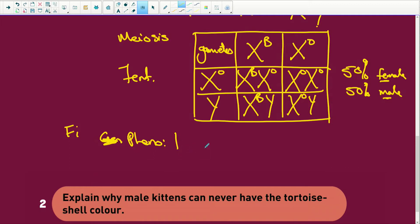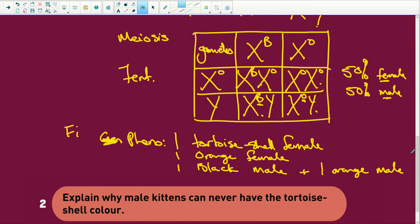What are we going to have? We're going to have one tortoiseshell female. And we have one orange female. And I'm running out of space. We have one black male cat. And we have one orange male. Okay, there you go. So tortoiseshell, orange, one black male, one orange male. Can you see here? You can never, ever have a tortoiseshell male. Why? Because there we have a Y chromosome in the way there.